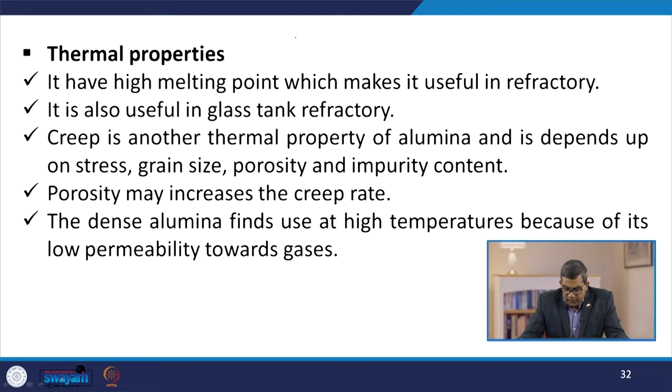Thermal properties: the high melting point makes alumina useful in refractory and glass tank applications. Creep depends upon stress, grain size, porosity, and impurity content — porosity may increase the creep rate. Dense alumina finds use at high temperature due to its low permeability towards gases. It is commonly used in the form of tubes and crucibles, and fused alumina mixed with clay produces aluminous cement, useful in the 1500 to 1700°C temperature range.